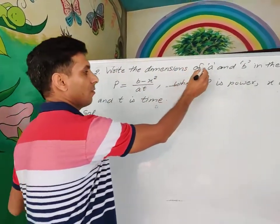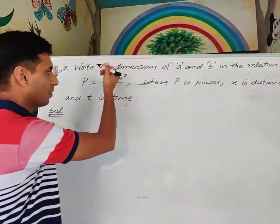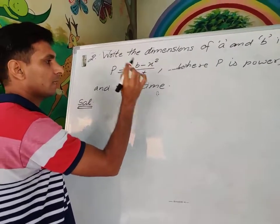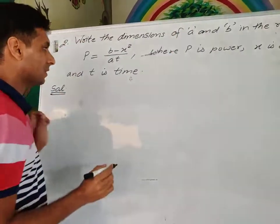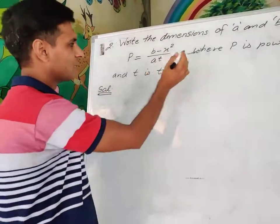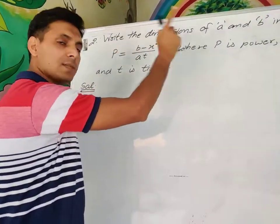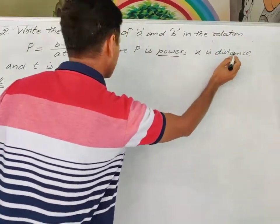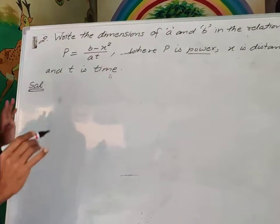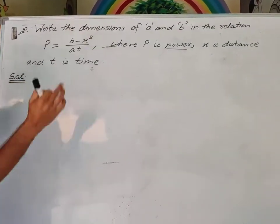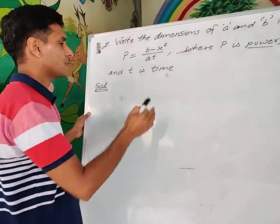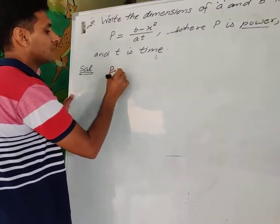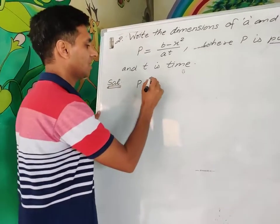Next question: Write the dimensions of A and B in the relation P = (B − x²)/AT, where P is power, x is distance, and T is time. Note carefully — in the previous question P was pressure, but here P is power. Power = work done / time, so its dimensions are M¹L²T⁻³.